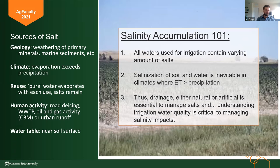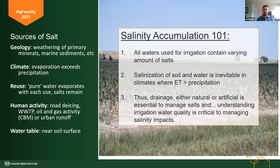Secondly, the climate. Salt problems tend to occur in arid places, really dry areas like the Western United States. That's because wherever evaporation and transpiration exceed precipitation and irrigation, you're going to have some salts left behind. Thirdly, reuse. When water gets reused, each time you reuse it — depending on what your application is — you're adding salts to the system unless you're purifying it in between. So you're making your water more salty every time you reuse it.